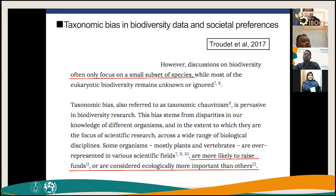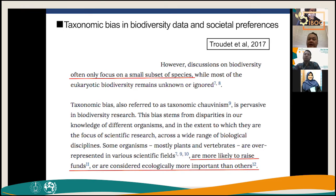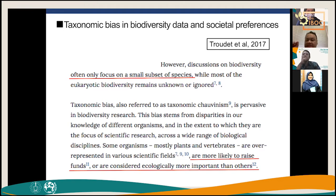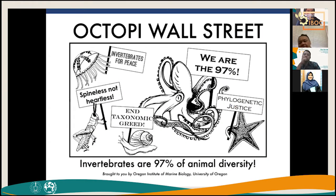Biodiversity discussions often focus on a small subset of species because they are more likely to raise funds, considered ecologically more important, or simply 'sexy' — like sharks or dolphins. Nobody wants to study tiny little snails in sea grasses. People prefer vertebrates, while invertebrates actually make up 97% of total animal diversity.